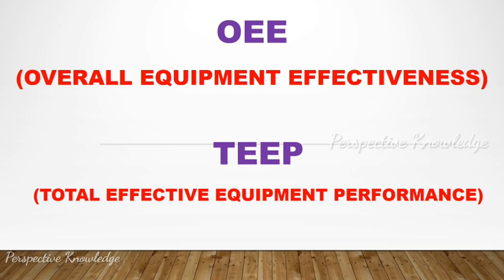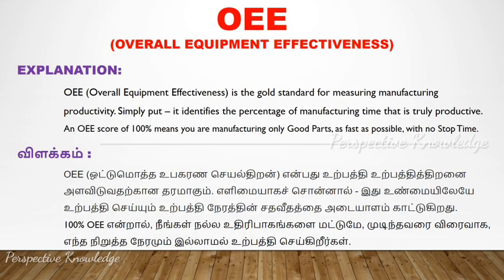TEEP — Total Effective Equipment Performance — and OEE — Overall Equipment Effectiveness — is a gold standard for measuring manufacturing productivity. It measures the percentage of manufacturing time that is truly productive. An OEE score of 100% means you are manufacturing only good parts, as fast as possible, with no stop time.